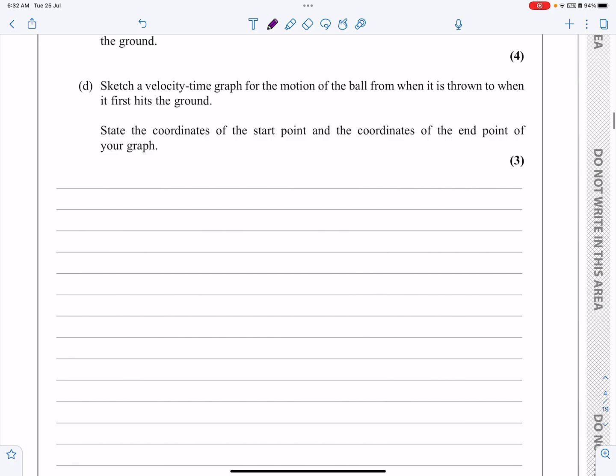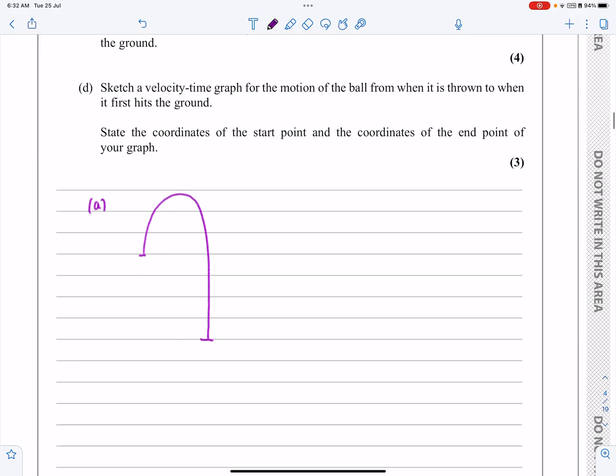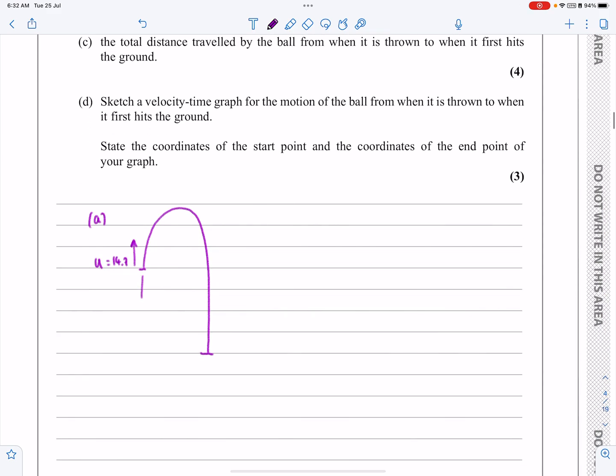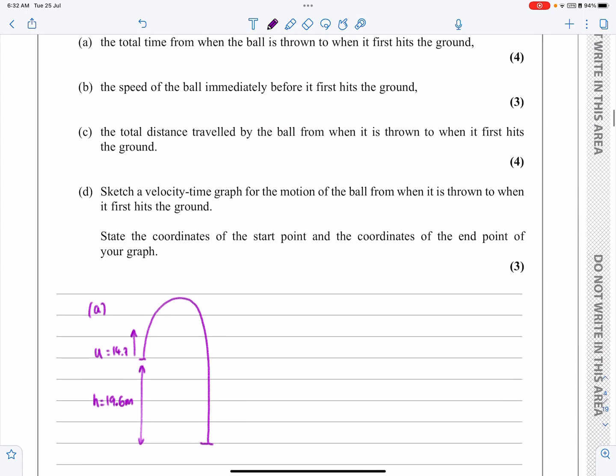So before I get on to the questions, what I tend to do with these diagrams is I just draw myself out a quick sketch that I can keep referring back to if I need to. And in this particular situation, I know that U is equal to 14.7 there. It's thrown up with a speed of 14.7. And if it's 19.6 metres above the ground, then that distance there, that height there is 19.6 metres.